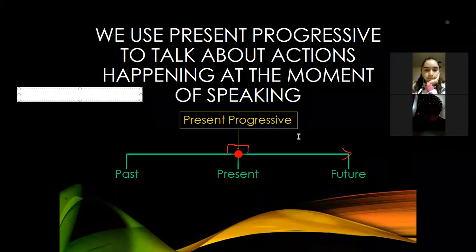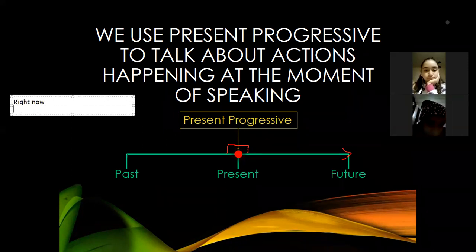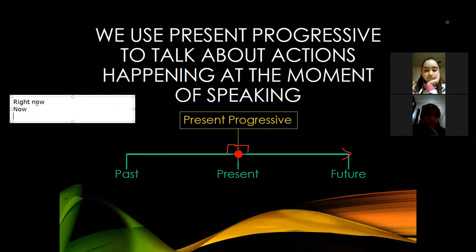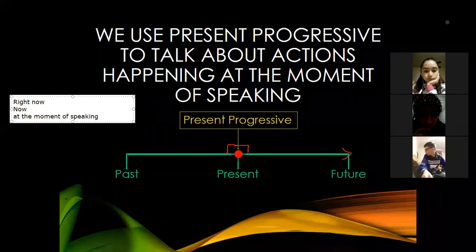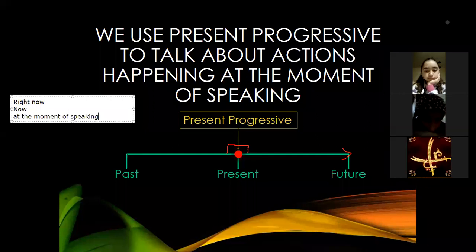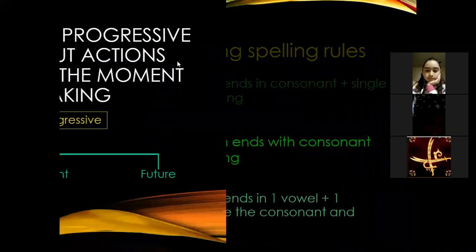Usually we have keywords — words we may find that tell us a sentence is in the present progressive. For example: 'right now,' 'now,' 'at the moment of speaking.' These are keywords that help us understand we're talking about present continuous tense, so whenever you need to choose the appropriate tense, search for these keywords.